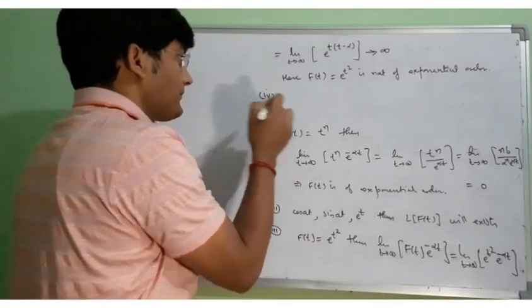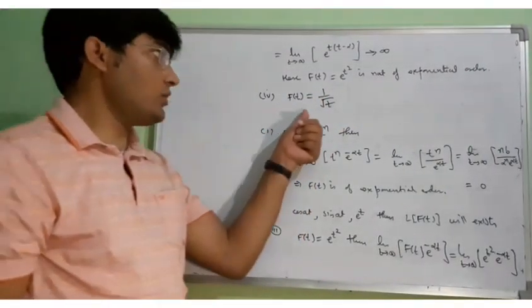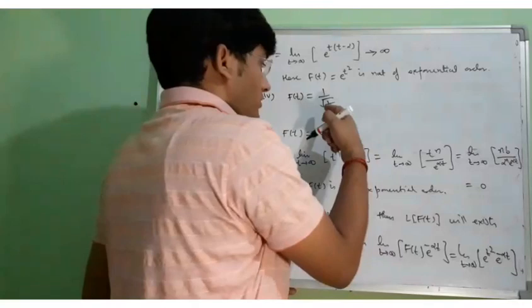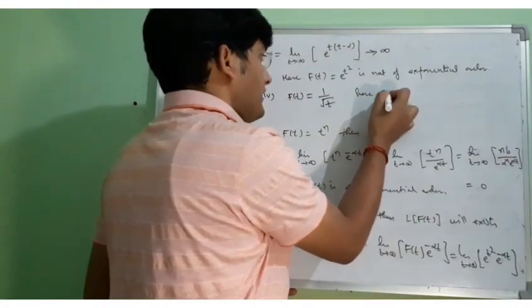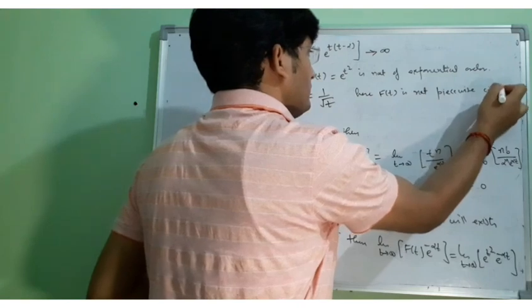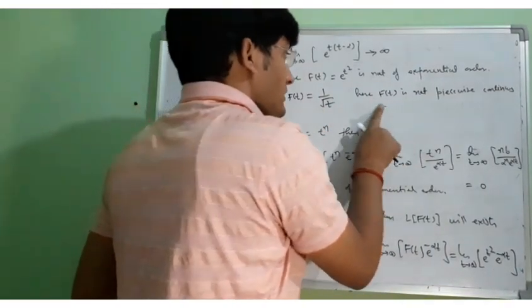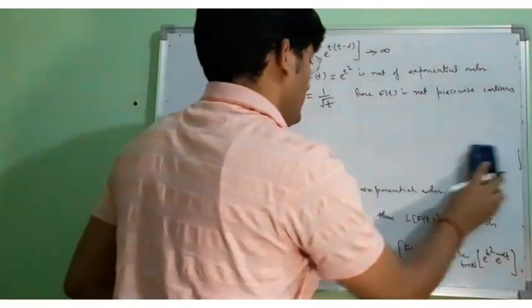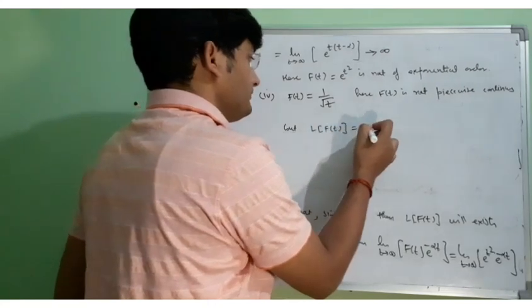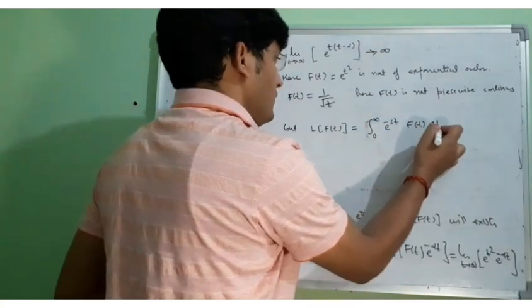For example, let F(t) = 1 over root t. You can see that here the function is not piecewise continuous — F(t) is not piecewise continuous at t = 0. But you will see that its Laplace will still exist. The Laplace of F(t) equals the integral from 0 to infinity of e to the power minus st times F(t) dt, where F(t) = 1 over root t, which can be written as t to the power half minus 1.